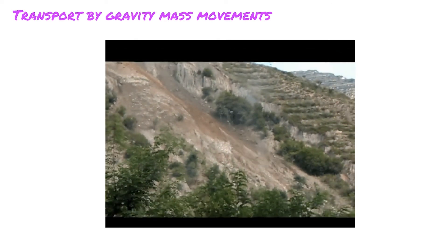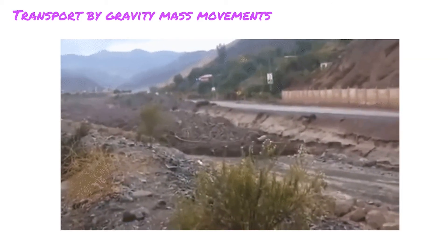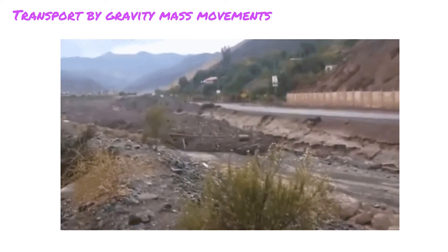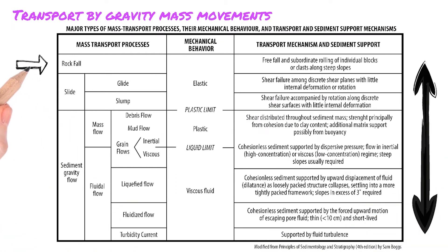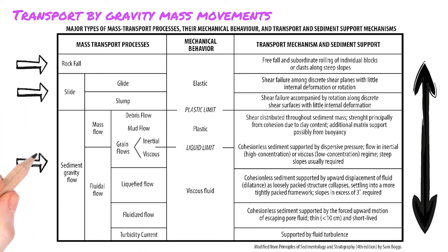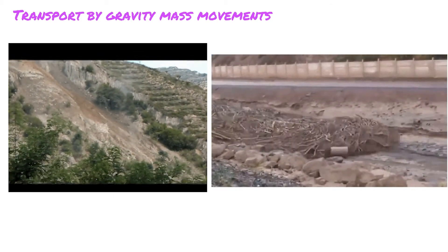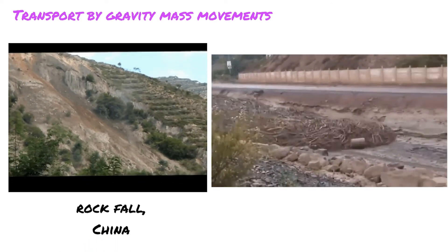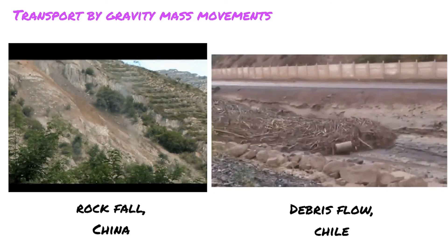So far we've talked about sediments carried by fluids. Now let's talk about the second way sediments are transported: gravity mass movements. This occurs when the main factor determining sediment movement is gravity, in both subaerial and subaqueous environments. There is a spectrum of mass sediment transport by gravity, including three main groups: rockfall, slides, and sediment gravity flow. Rockfalls and slides are not directly caused by fluid movement, as shown in this video of a rockfall in Gansu Province, China. Gravity flow of sediments, however, involves movement of sediment masses with fluid interaction, as shown in this video of a debris flow that occurred in Chile in 2015.